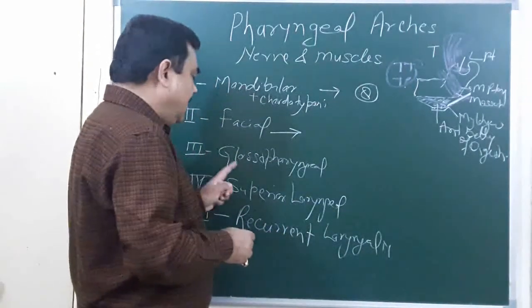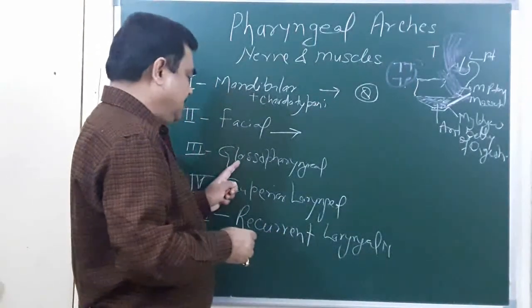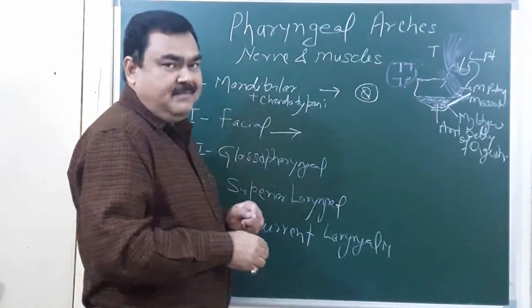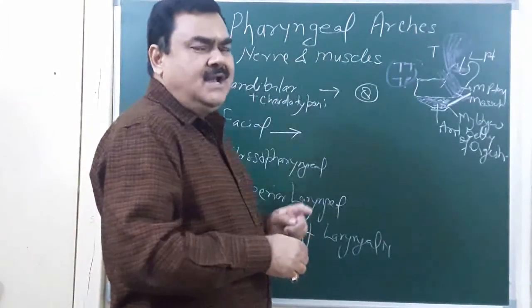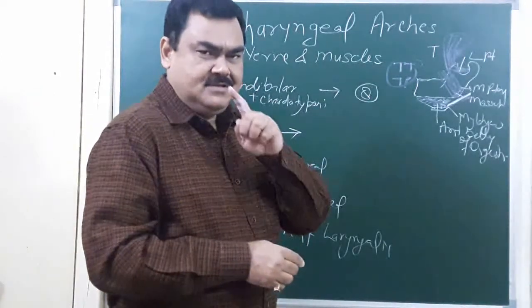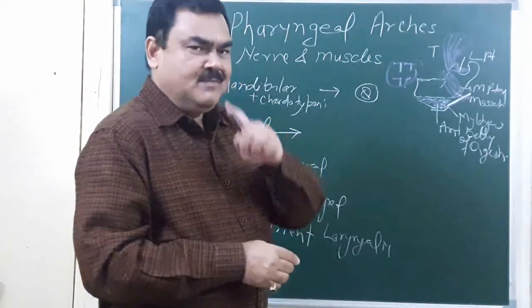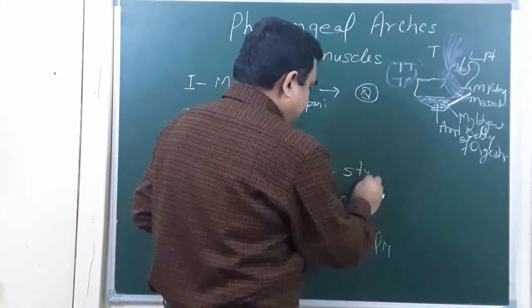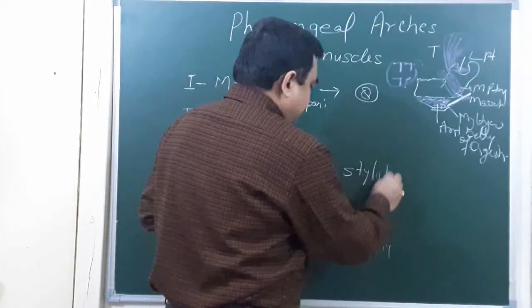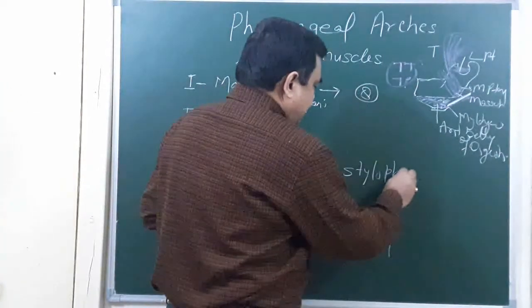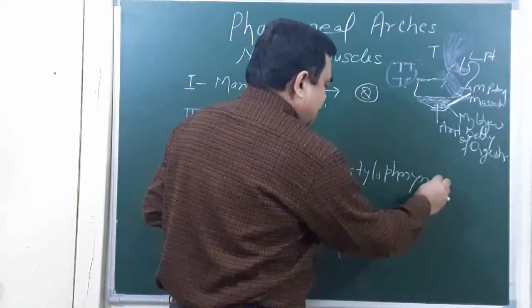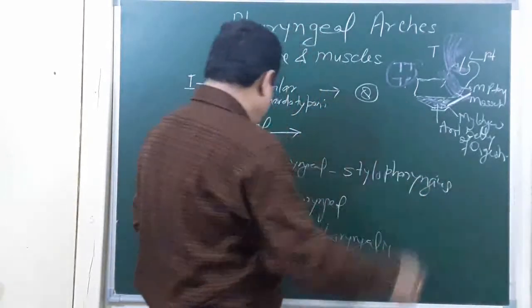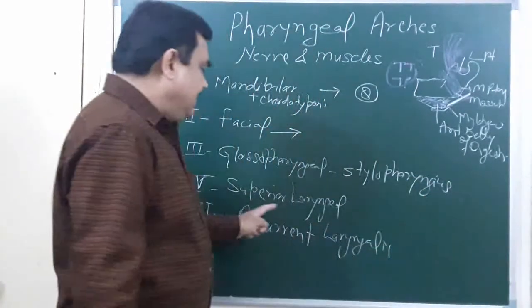The third pharyngeal arch nerve is the glossopharyngeal nerve. It supplies only one muscle, that is the stylopharyngeus muscle.